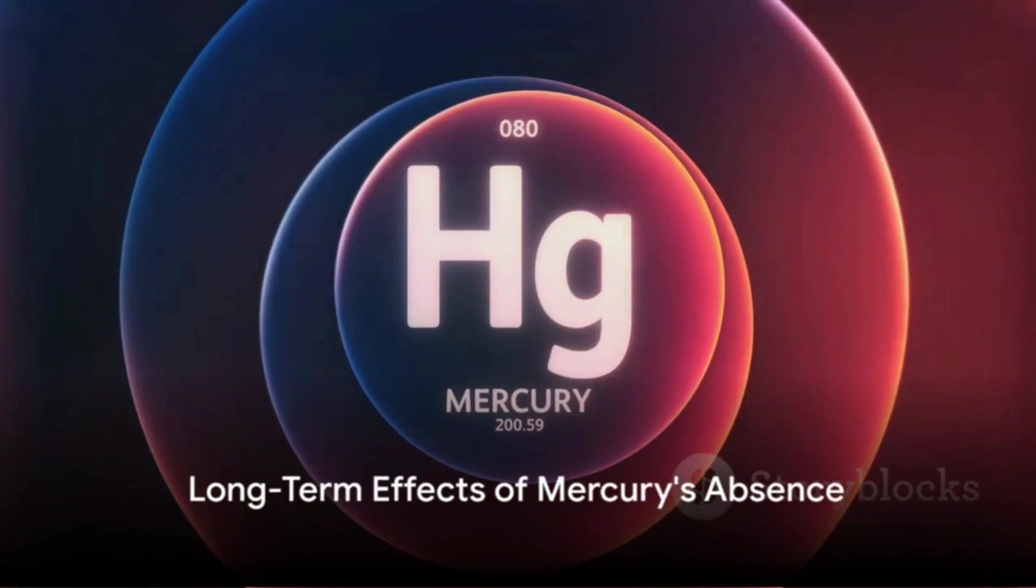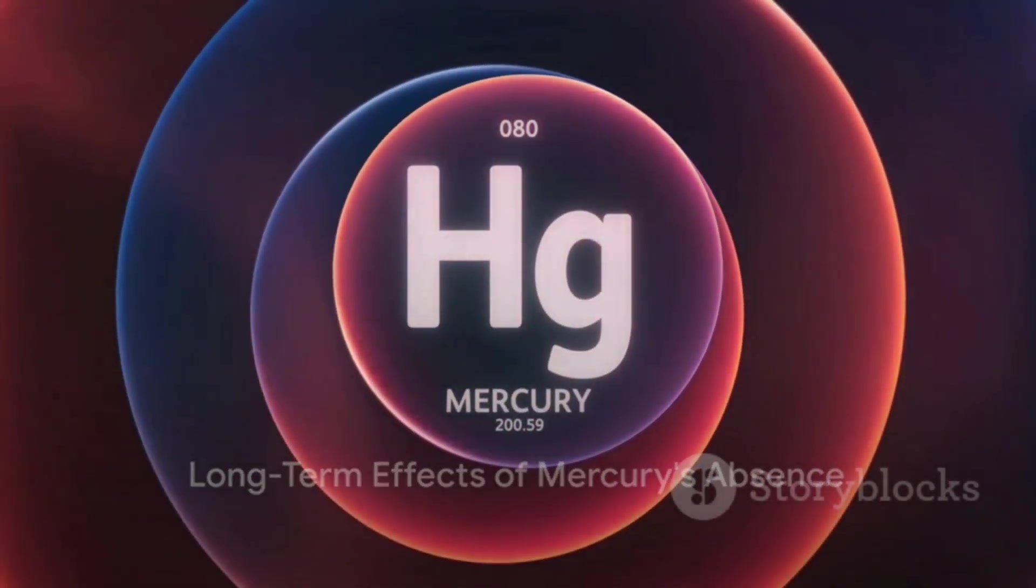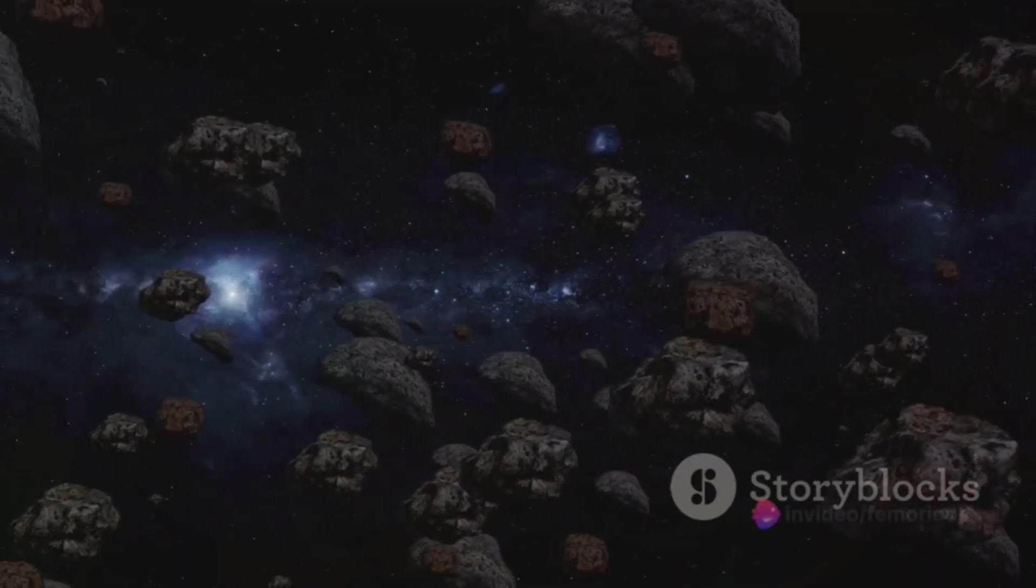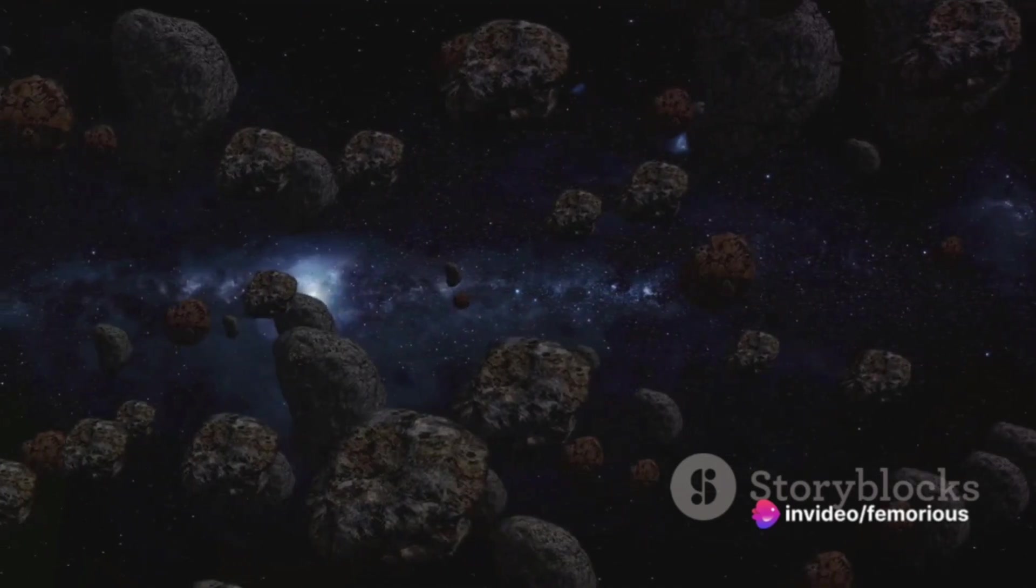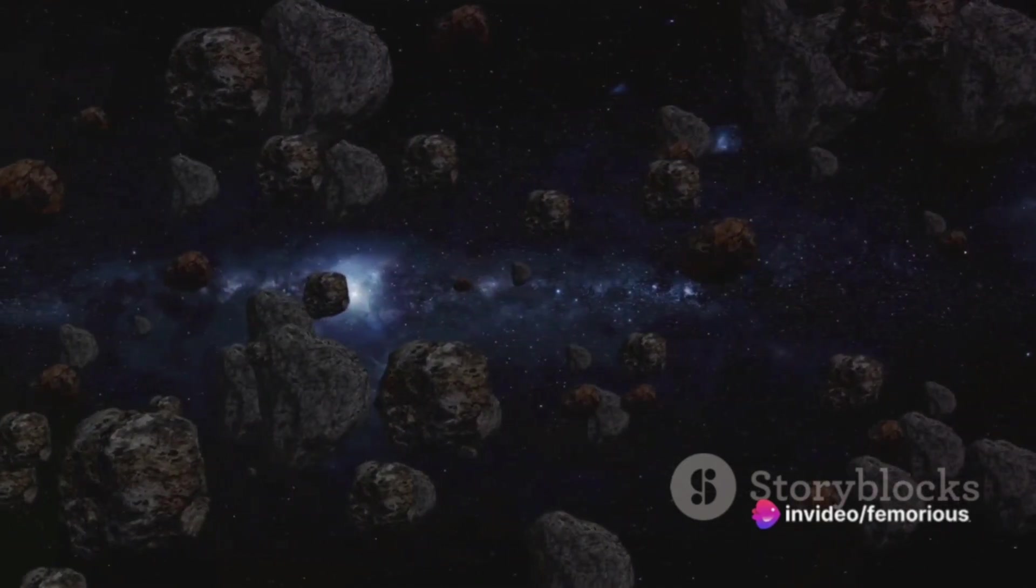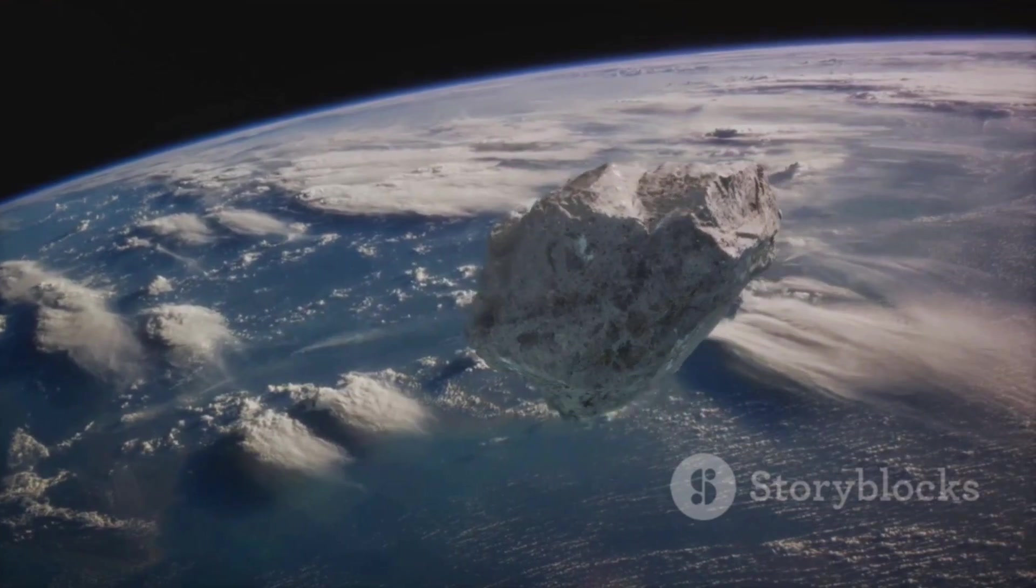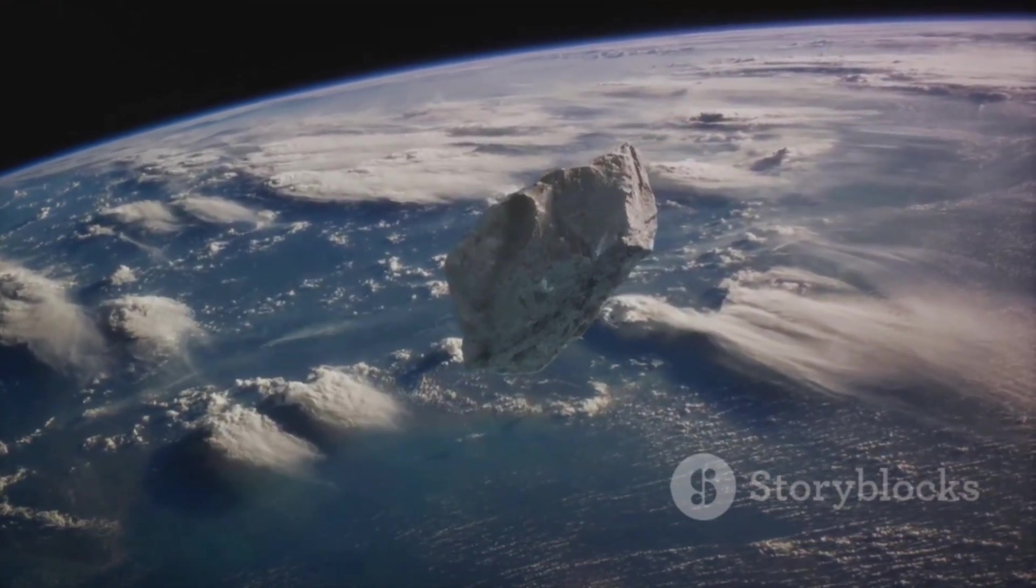Over time though, the absence of Mercury could lead to subtle but lasting effects. The gravitational balance of the inner solar system would be slightly altered, potentially affecting the orbits of asteroids and comets. This could in turn increase the risk of impacts on Earth, although the likelihood would still be small.